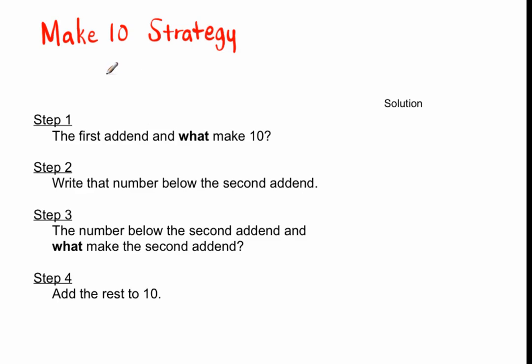We're going to start with adding two one-digit numbers. Let's start with our example of 6+7. We're trying to find out what 6+7 equals. The way the Make 10 Strategy works is we look at the first addend and ask ourselves: 6 and what make 10?